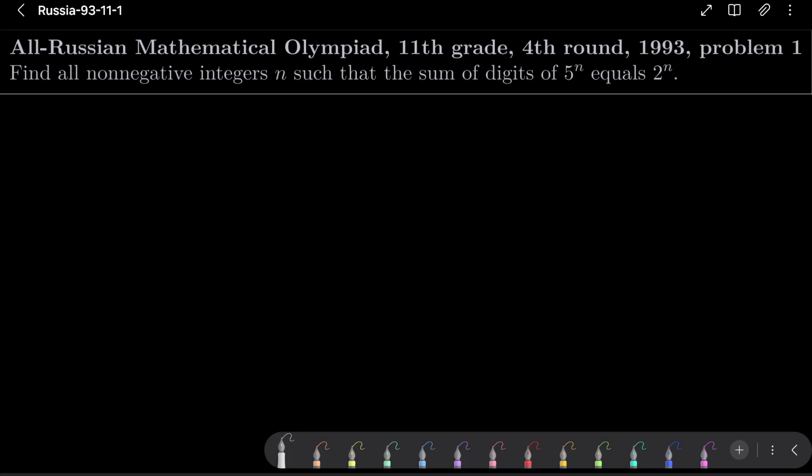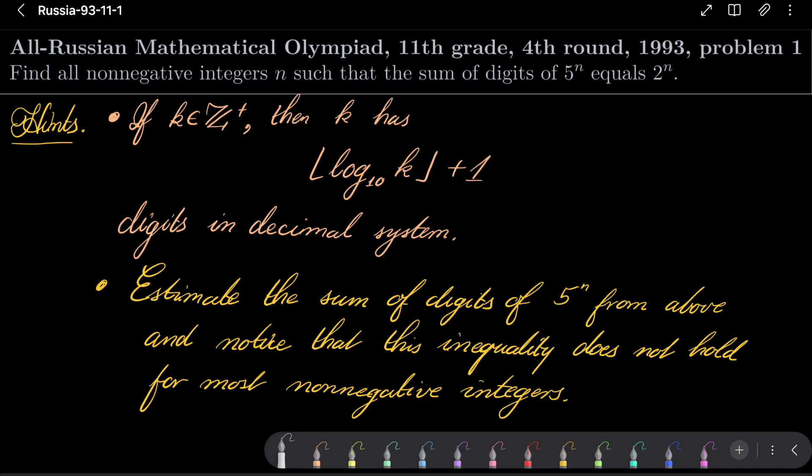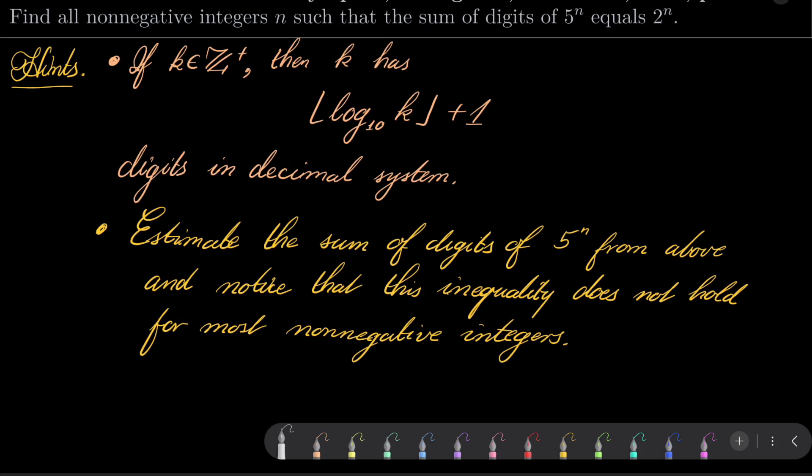It's a nice number theoretic problem, here are my hints. We will use this well-known fact that if k is a positive integer then k has exactly floor of decimal logarithm of k plus one digits in decimal system, in decimal representation.